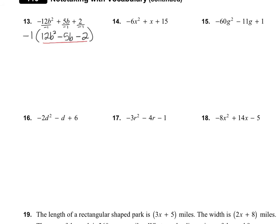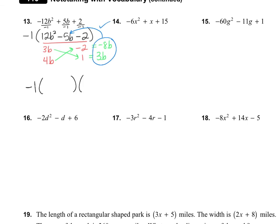For number 13, after pulling out the negative 1, we have positive 12b squared minus 5b minus 2. I'll use 3b and 4b for the multiples of 12b squared. Since the numbers multiply to positive 2 but must add to negative 5, both have to be negative — I'll try negative 2 and positive 1. Cross multiplying: 3b times 1 is 3b, and 4b times negative 2 is negative 8b. Negative 8 plus positive 3 equals negative 5 — it works on the first try! Our answer is negative 1 times (3b minus 2)(4b plus 1).